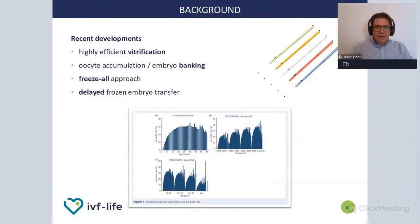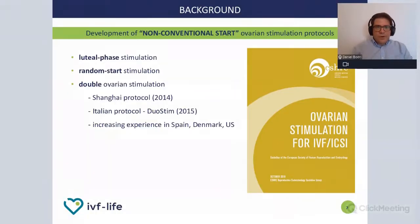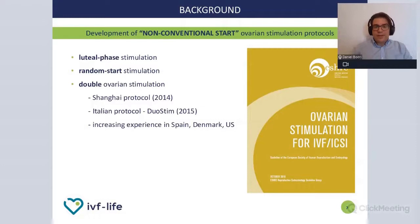This is the rationale why it is a good idea to repeat stimulation cycles, even back-to-back as with a double ovarian stimulation approach, to obtain higher chances of progress. This led to the development of non-conventional stimulation protocols, meaning that stimulation could not only be started at the beginning of the menstrual cycle, but also in the luteal phase after ovulation, or at random, independently from the stage of the menstrual cycle. This is especially useful for urgent fertility preservation.